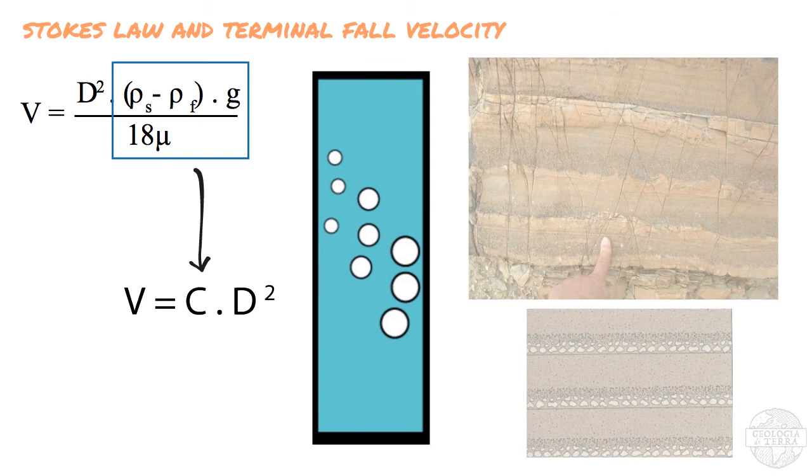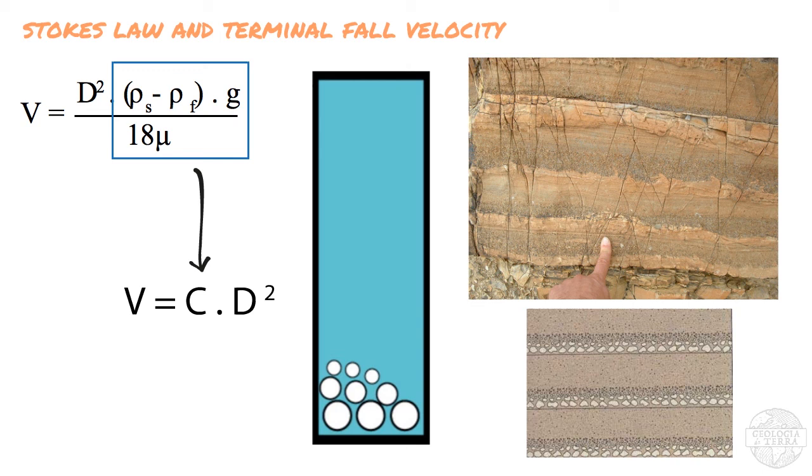This means that the coarser the particle, the higher its terminal settling velocity. For instance, let's imagine a standing bottle of water or a flow that is decreasing in velocity.